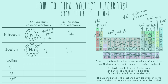Let's do a couple more using just the shortcut. For iodine, we find it on the periodic table at number 53, so it has 53 total electrons when neutral. Then we just use our shortcut: iodine is in the seventh column, which means it has seven valence electrons.